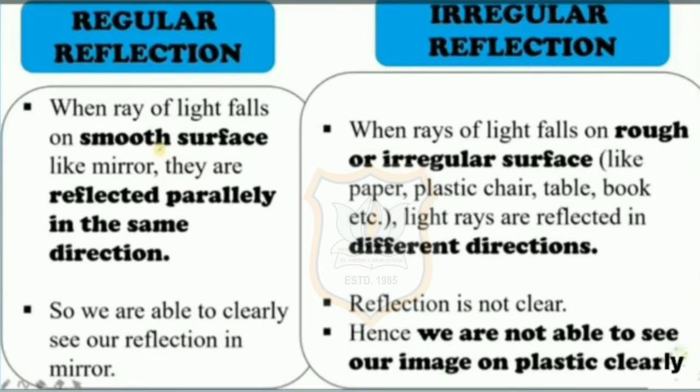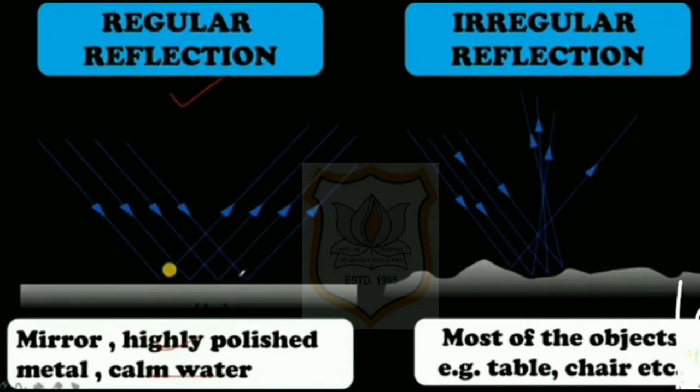There is a difference between regular reflection and irregular reflection. Regular reflection: when rays of light fall on a smooth surface like a mirror, they are reflected parallelly in the same direction, so we are able to see our reflection clearly in the mirror. Examples shown in the slide include mirrors, highly polished metal, and calm water.